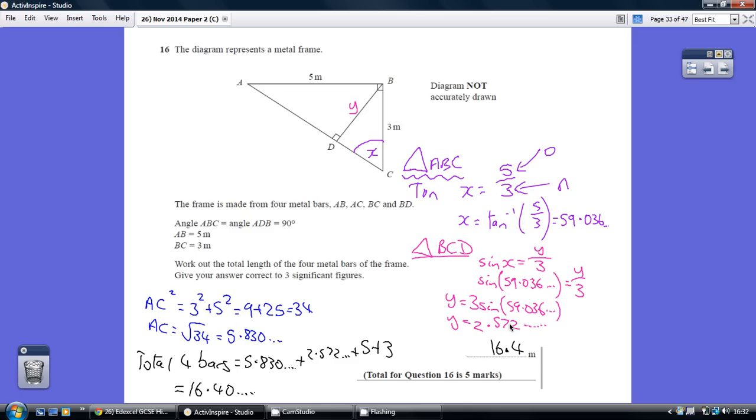So we've now worked out the length of the four bars, so we just add them together. 5.83, 2.572, and the 5 and 3 we started with gives us 16.40 dot dot dot, which is 16.4 to 3 significant figures.